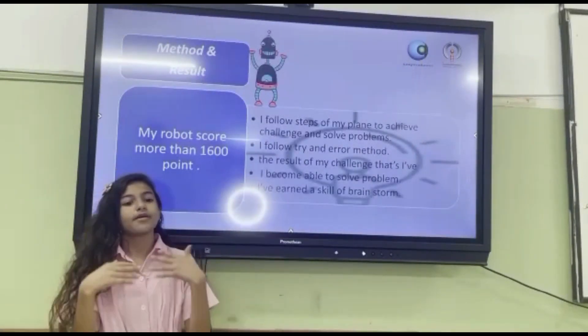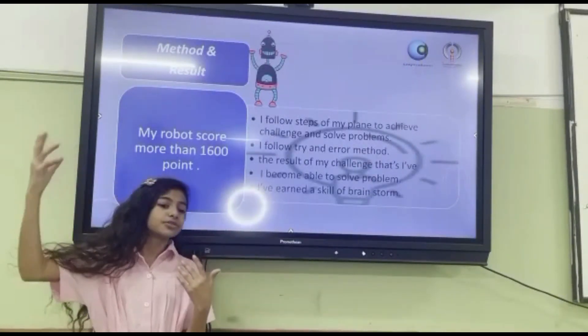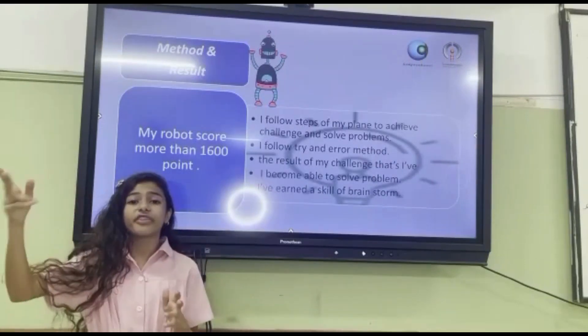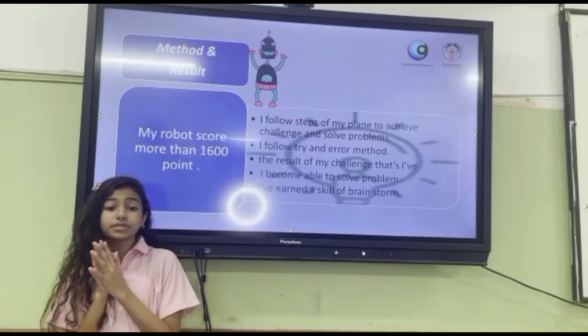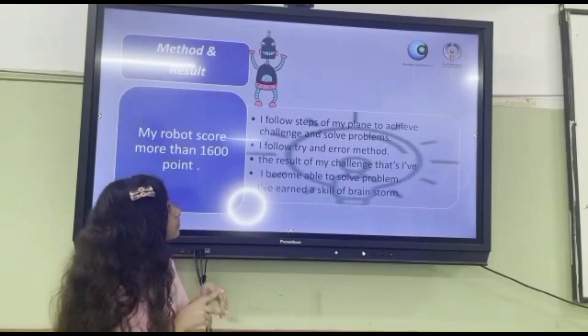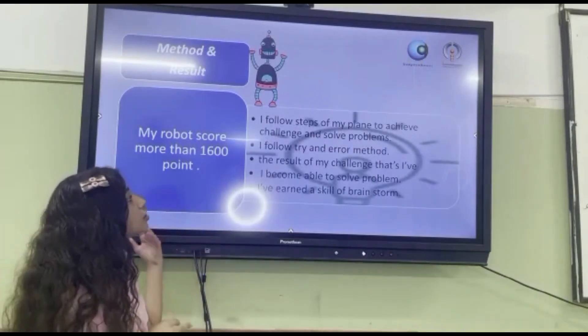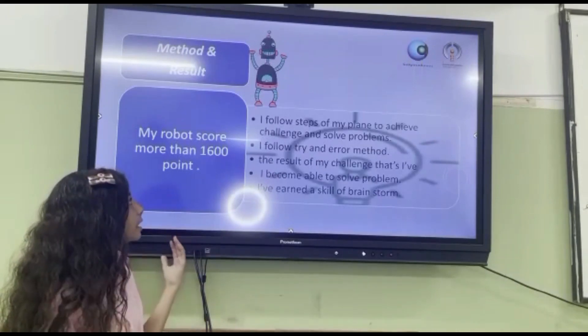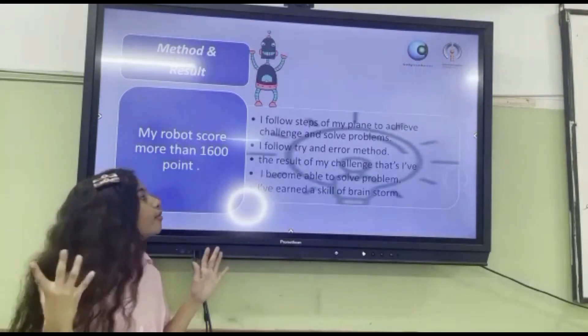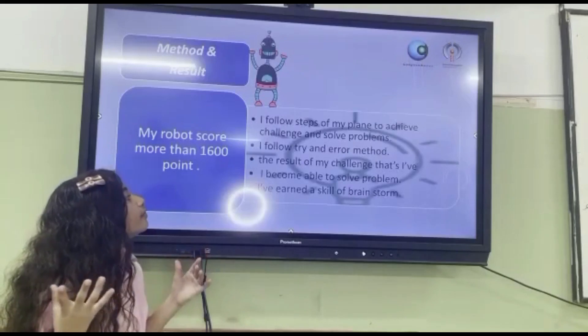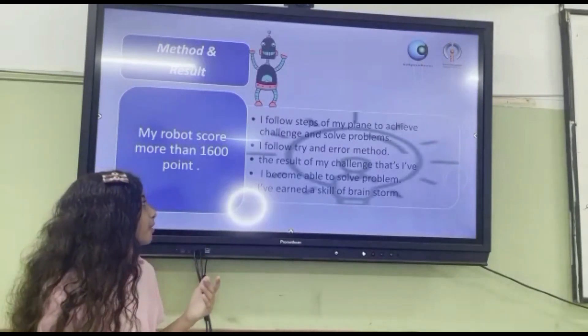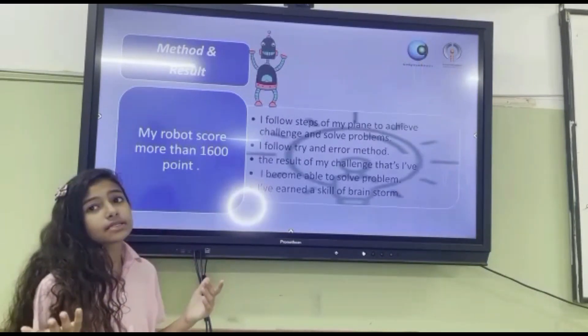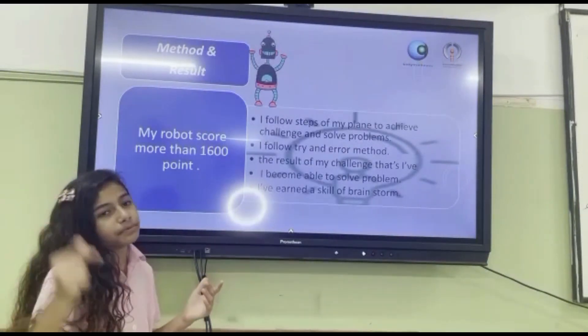Methods and results. My robot achieved a score of more than 1600 points. I follow steps of my plan to achieve challenges and solve problems. I follow try and error methods. The result of my challenge is that I became able to solve problems. I have earned a skill to persevere.